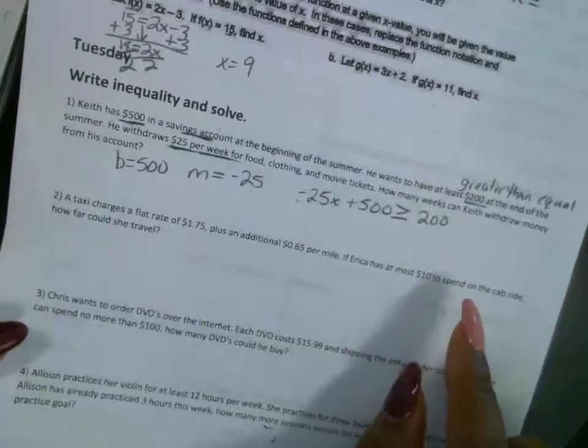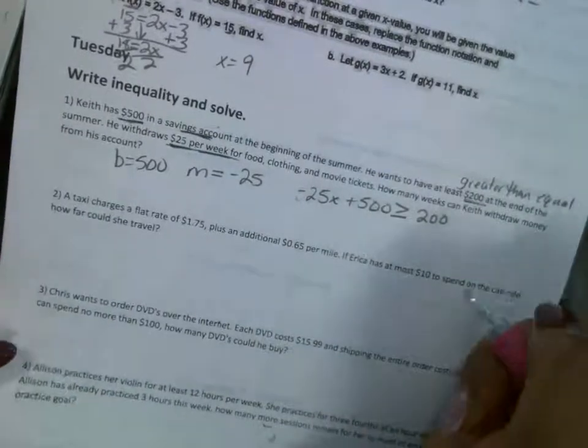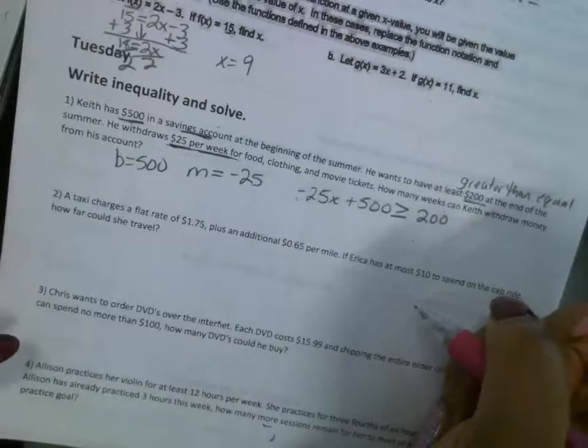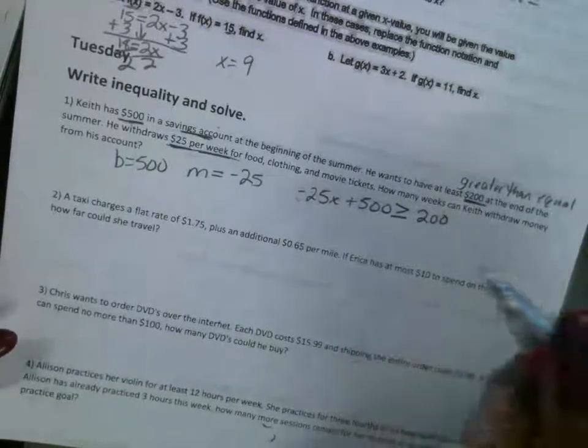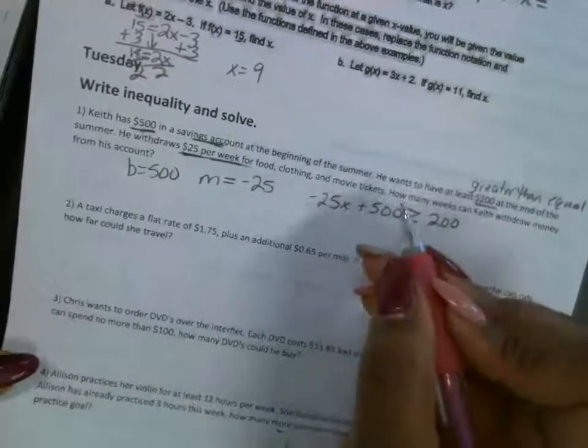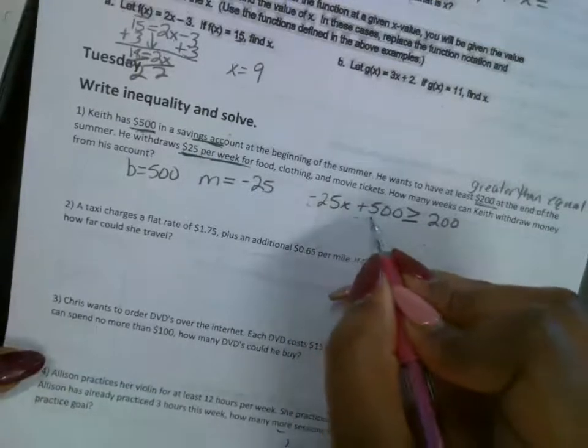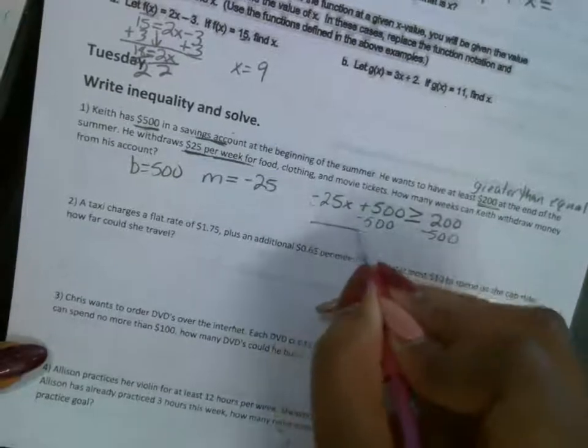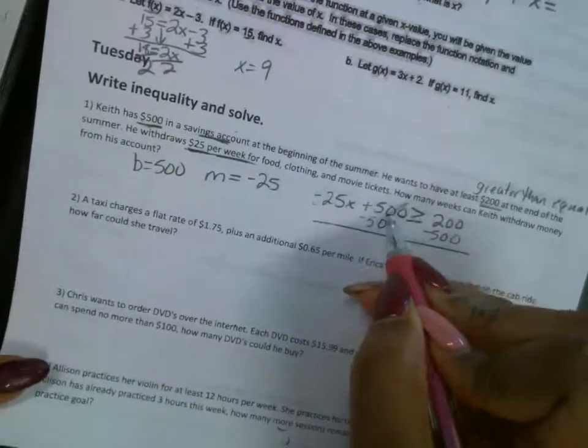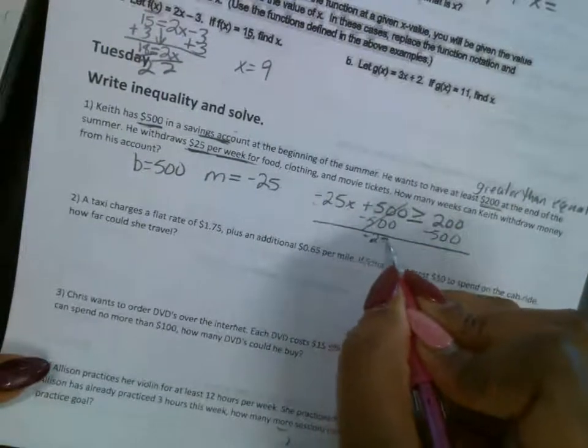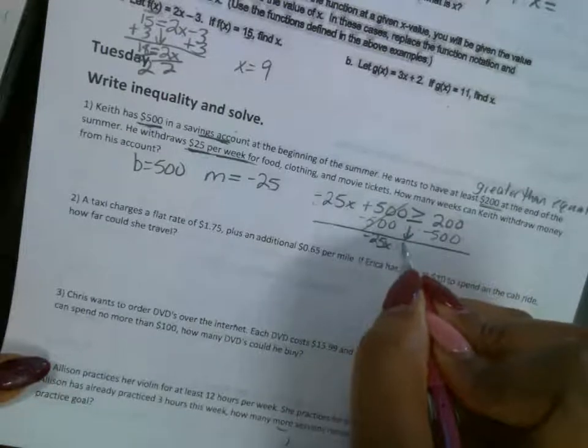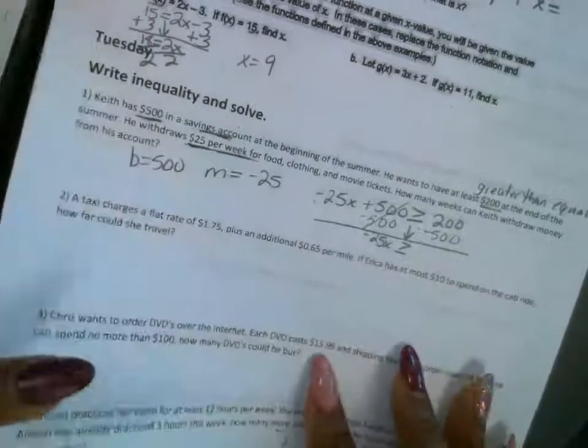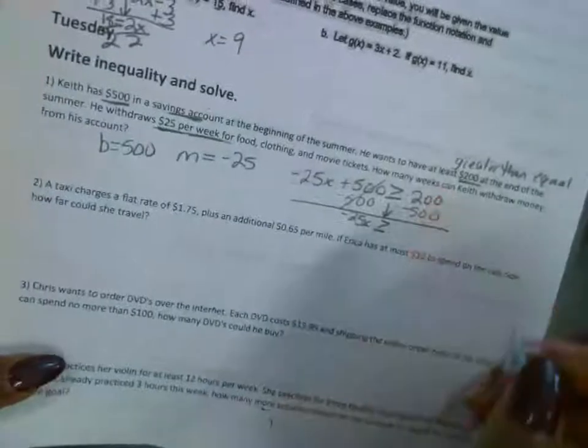It can't be under that, all right? So now we're going to solve to see what our x has to stay up above. So in order to get x by itself, we're going to subtract $500 from both sides. So this is gone, and we're left with negative $25x.